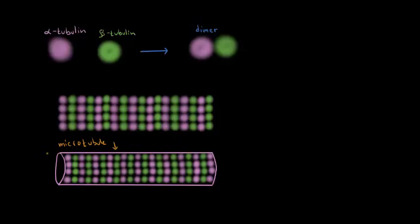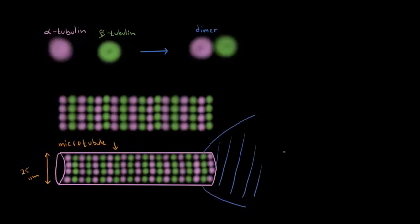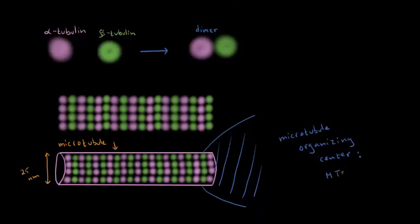The diameter of a microtubule is approximately 25 nanometers. At one end of the microtubule, it's going to be anchored to a place called the microtubule organizing center, or in short, the MTOC.